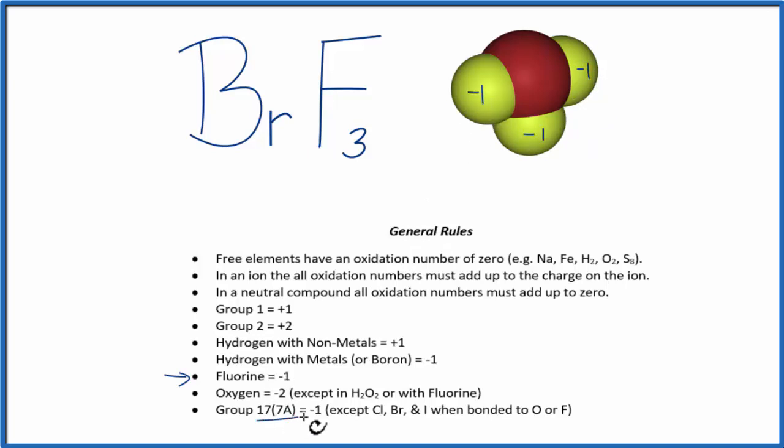And then group 17, bromine's in group 17, it's a halogen, so it should have a minus one charge, except when it's bonded to these elements, which include fluorine. So we can't use this rule because the bromine is bonded to a fluorine.